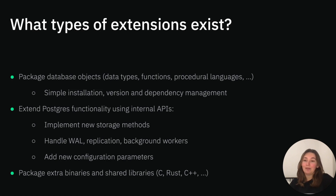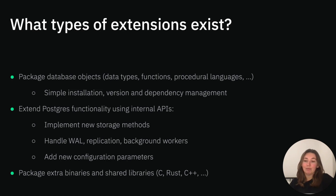Next up, we have extensions that enhance Postgres functionality using internal APIs. Such extensions are usually written in C, and they can be really powerful. In an extension, one can implement new storage methods, handle volume replication, implement new background jobs, or add configuration parameters. One example of such an extension is Neon itself. The Postgres extension system doesn't stop at C — you can package extra binaries and shared libraries written in nearly any language that can be compiled into a binary, for example C++ or Rust.